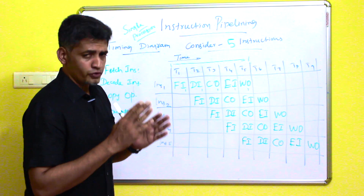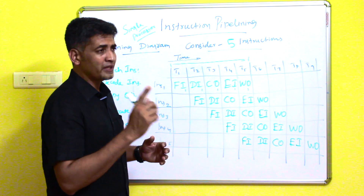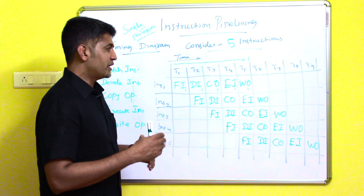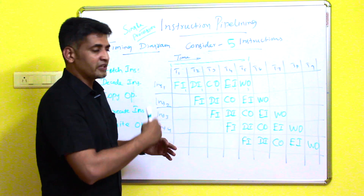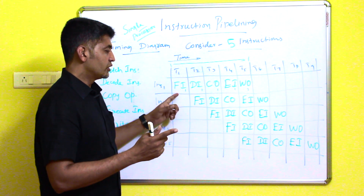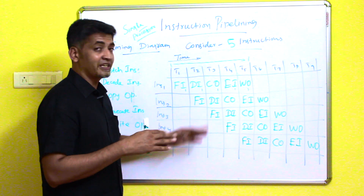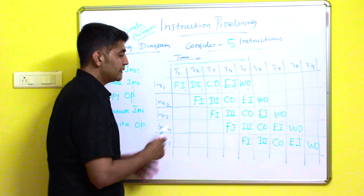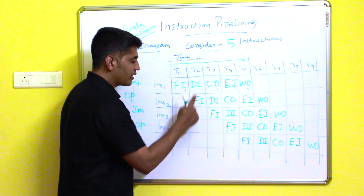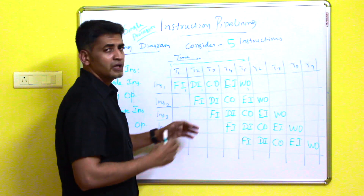Without pipelining, the processor does only one type of operation at a time — only one instruction can be fetched at a time, and only one instruction can be decoded at a time. The pipelining concept works by overlapping instructions across phases: while the first instruction is being decoded, the second instruction is being fetched simultaneously.